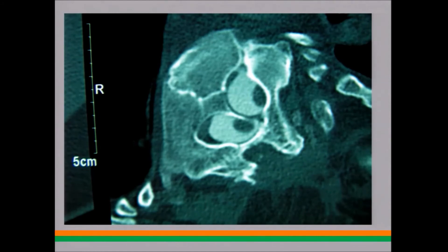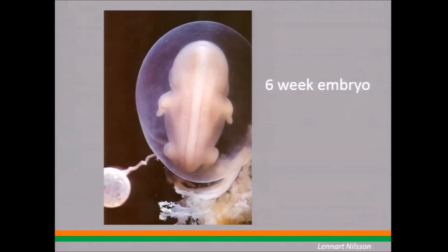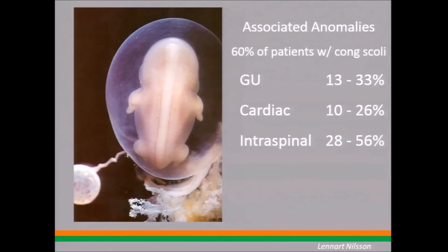All kinds of things can go wrong during development. The hands, arms, lower extremities, heart, and kidneys are all forming around the same time. So if there's an insult that causes damage to the developing child resulting in congenital scoliosis, it might also affect the developing heart and lungs. About 50 to 60 percent of kids who have a congenital deformity of the spine have some abnormality of their kidney or heart, which must be considered when treating the scoliosis.